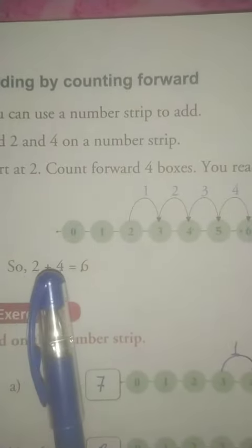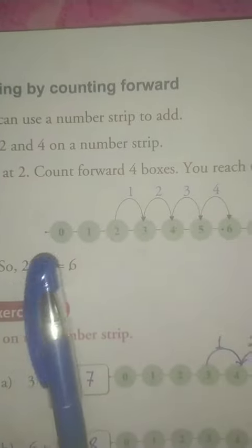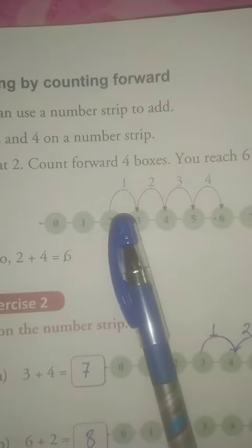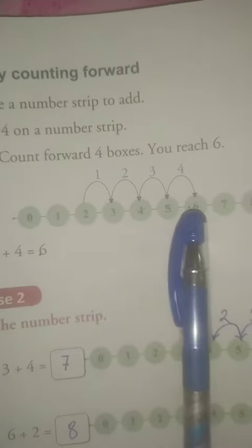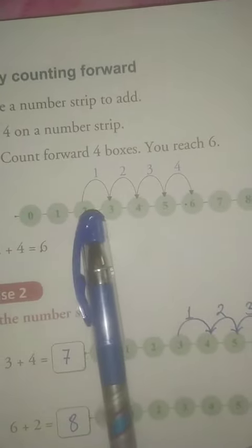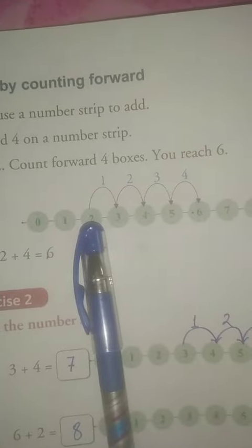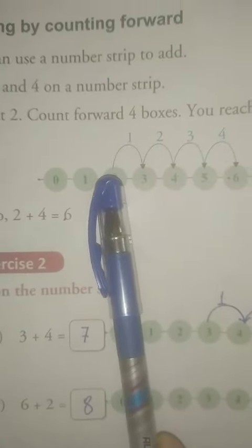Count forward 4 boxes. Because we have to add 4 with 2. We will start at 2 and count forward 4 boxes. हम लोग को 2 के साथ 4 को plus करना है. इसलिए हम लोग 2 से start करेंगे और कितना box आगे जाएंगे? 4 boxes.